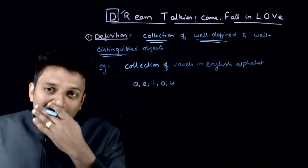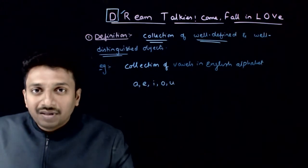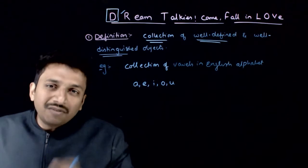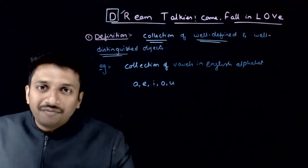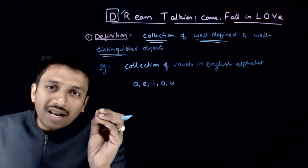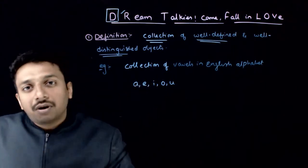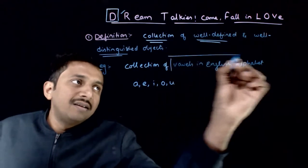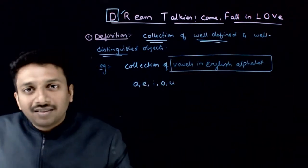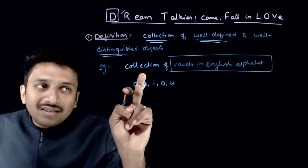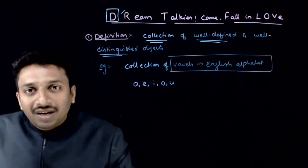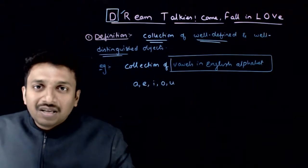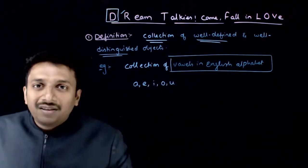Well-definedness means that when you define a set, the definition has to be very clear. That means if you take any object, you should be able to tell whether that object belongs to the set or does not belong to the set. Once you have defined the set — for example, this set contains vowels of English language — is this well-defined? Yes.